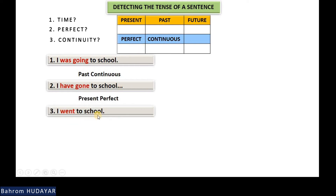Next example: 'I went to school.' Time — it is past. Perfect — no, there is no perfect in this sentence. Continuous — no, there is no continuity. So the tense of the sentence is past simple.